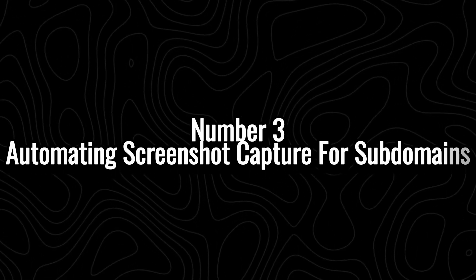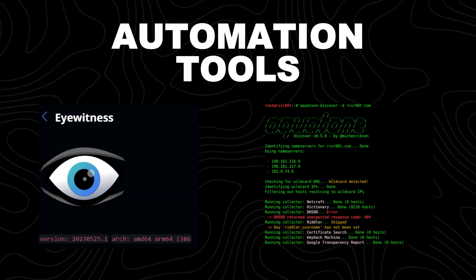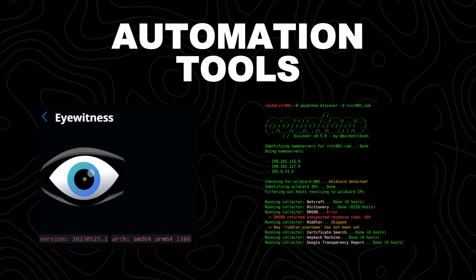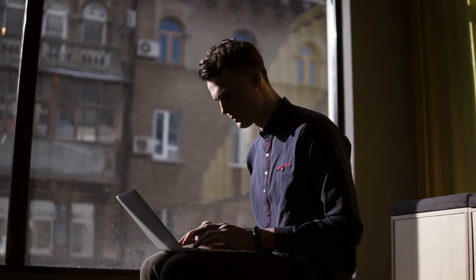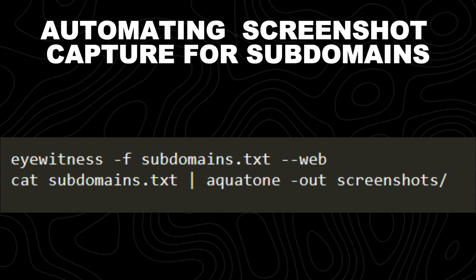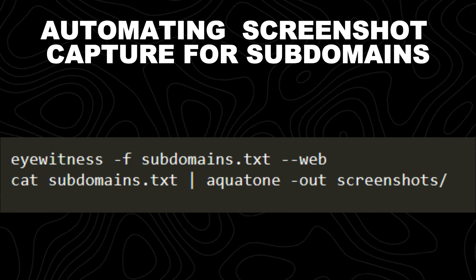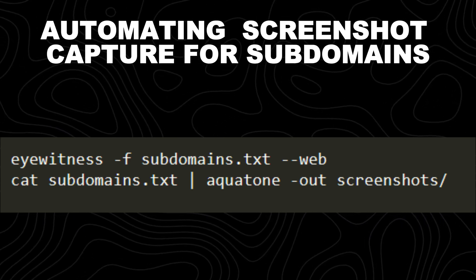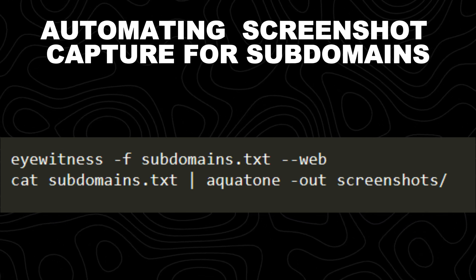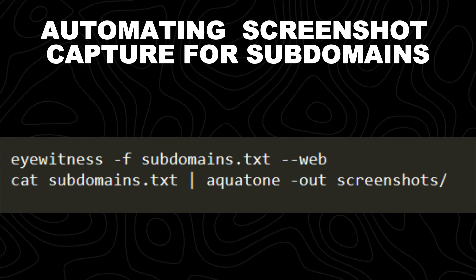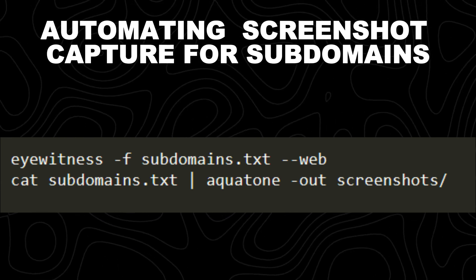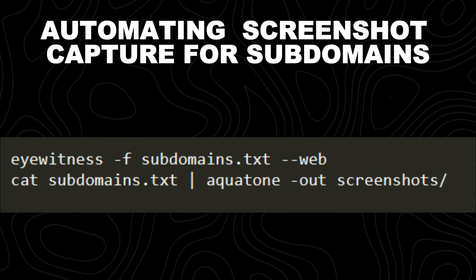Number 3: automating screenshot capture for subdomains. Once you have discovered subdomains, the next step is visual reconnaissance — capturing screenshots of web applications running on those subdomains. Instead of manually visiting each one, automation tools like Eyewitness and Aquatone can quickly generate screenshots, helping you identify interesting and vulnerable targets at a glance. Eyewitness is easy to use: just write the tool name with the -f option and specify the input file containing a list of subdomains. The second command automates screenshot capturing using Aquatone, a reconnaissance tool that helps visualize and identify interesting web targets.